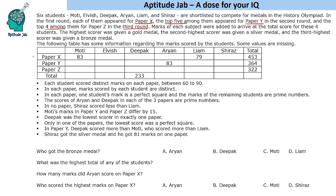So this is round 1, round 2, round 3. There are 6 students in round 1, one gets eliminated, leaving the top 5, and then the top 4 out of these 5 appear in the final paper. Marks of each subject were added to arrive at the total score for these 4 students. The highest scorer was given gold, the second highest silver, and the third highest was given a bronze medal.